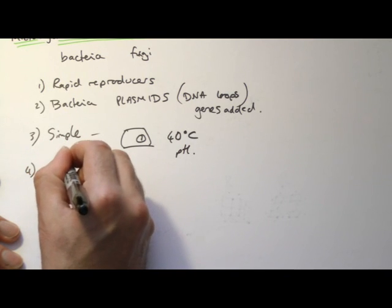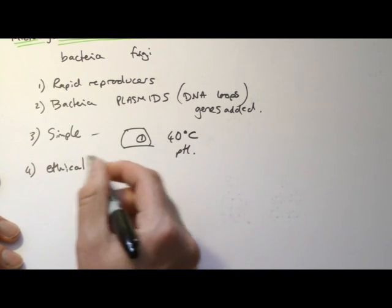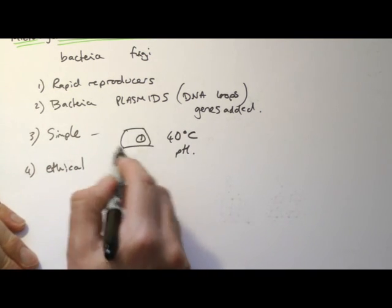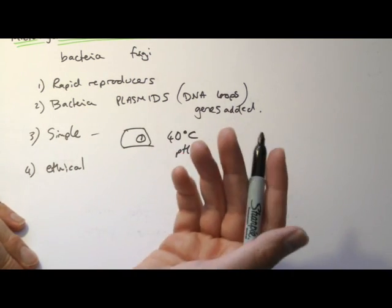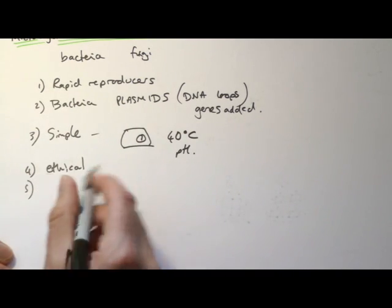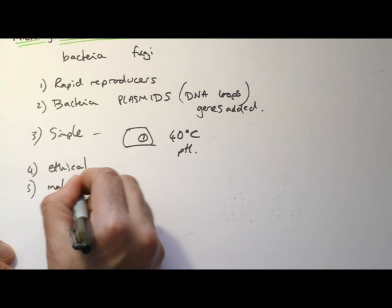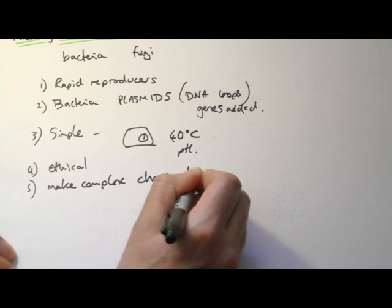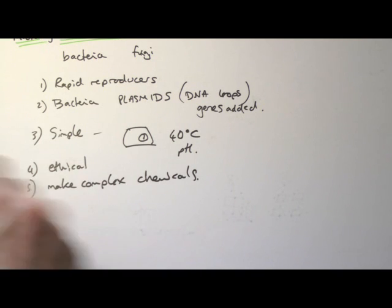There are no ethical, or very few ethical considerations. Nobody particularly minds if a pile of fungi gets killed or is trapped in a kind of fermenter. It's not like an animal, so we don't have those worries with it. And very importantly, they can make complex chemicals, and they can do it quite easily. This is what we're going to look at in a second.